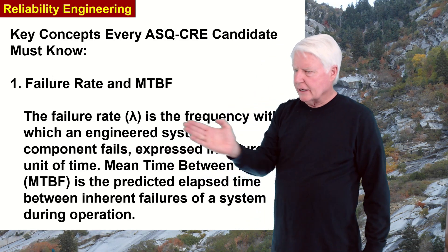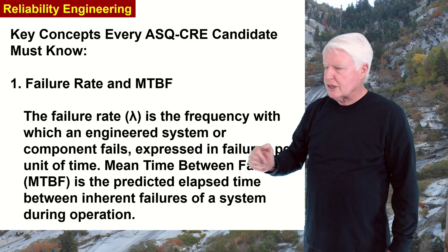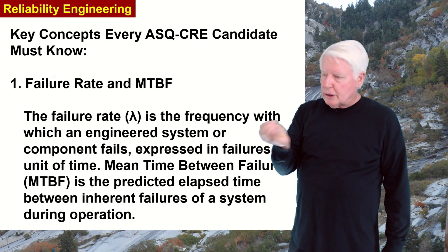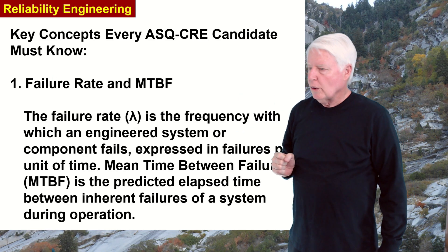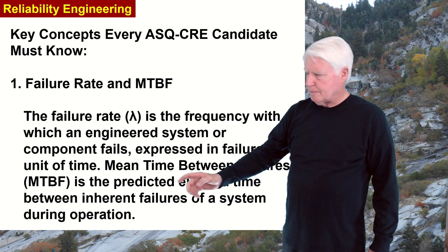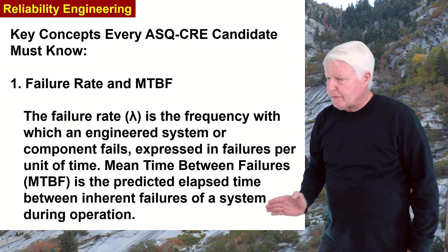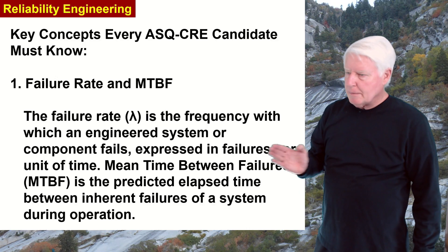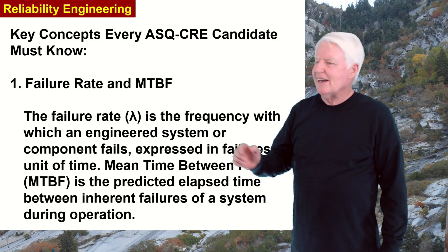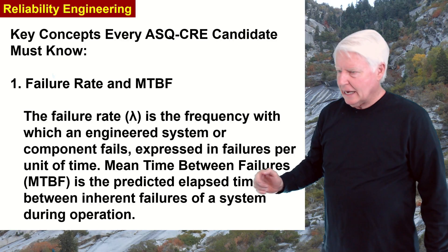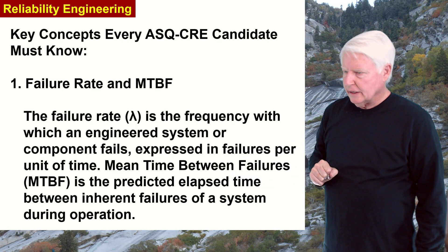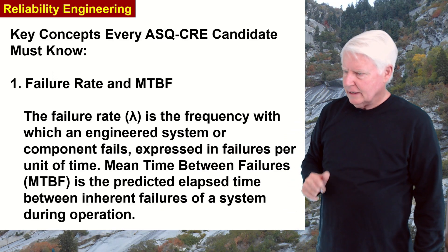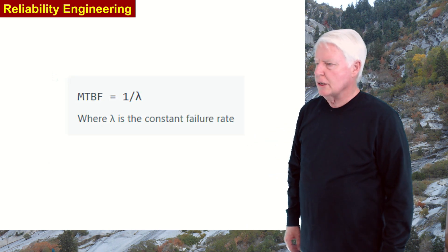The failure rate, or lambda, is the frequency with which an engineered system or component fails, expressed in failures per unit of time — for example, one failure per year. Mean time between failures (MTBF) is the predicted elapsed time between inherent failures of a system during operation, and it's expressed as units of time per failure — the inverse of failure rate.